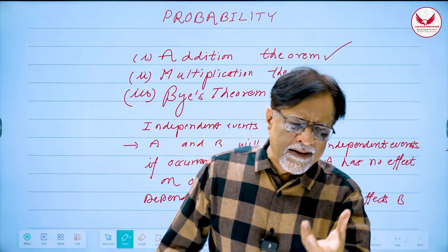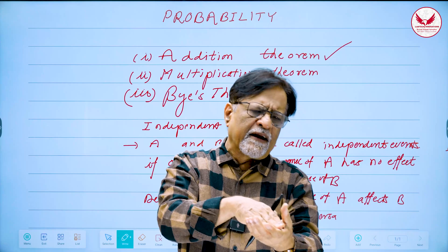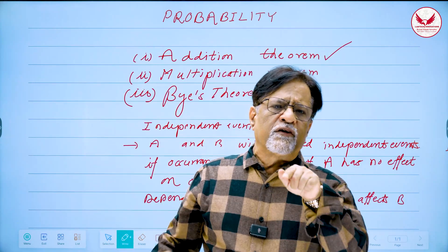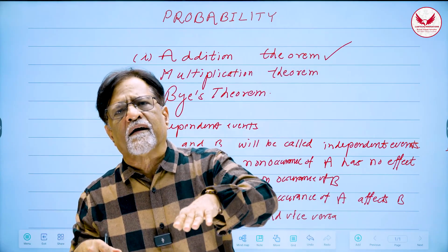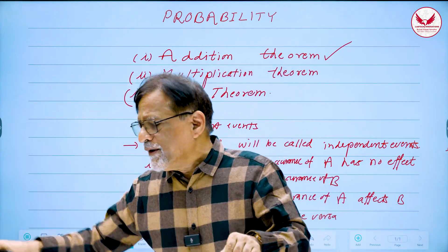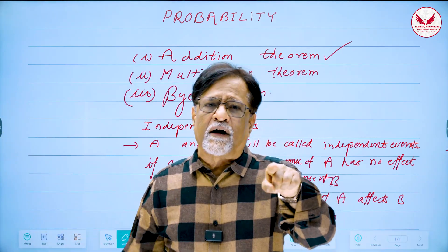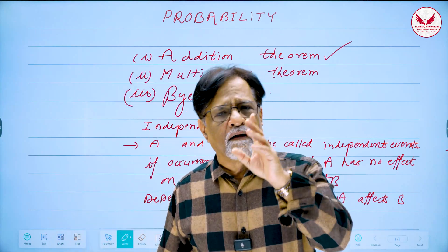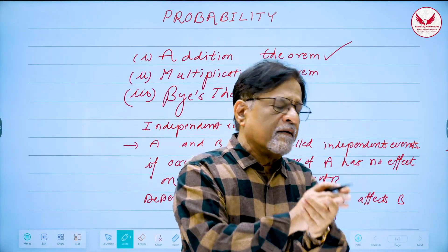Consider a pack of 52 cards. If I take one card, look at it, replace it, reshuffle, and then take a second card, whether the first card is a spade does not affect the second — these are independent events. But if I take one card and throw it away before drawing the second, then the second card being a spade depends on whether the first was a spade, because there would be only 12 spades left instead of 13. So these are correct examples of independent and dependent events.